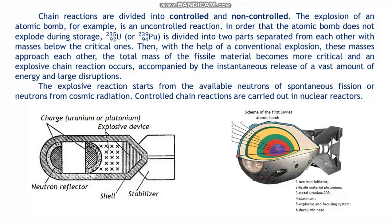Chain reactions are divided into controlled and uncontrolled. The explosion of an atomic bomb, for example, is an uncontrolled reaction. In order that the atomic bomb does not explode during storage, U-238 or Pu-239 is divided into parts separated from each other with mass below the critical one. Then, with the help of a conventional explosion, these masses approach each other. The total mass of the material becomes supercritical and the explosive chain reaction occurs, accompanied by the instantaneous release of a vast amount of energy. The explosive reaction starts from available neutrons of spontaneous fission or neutrons from cosmic radiation.